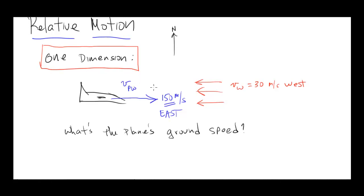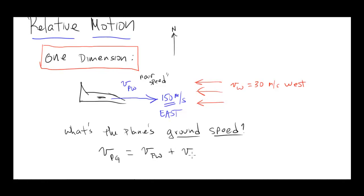This is what I was calling airspeed, which is the speed relative to the air itself. But we're asking now for the ground speed, which is the speed relative to the ground. The wind speed of 30 meters per second is relative to the ground.